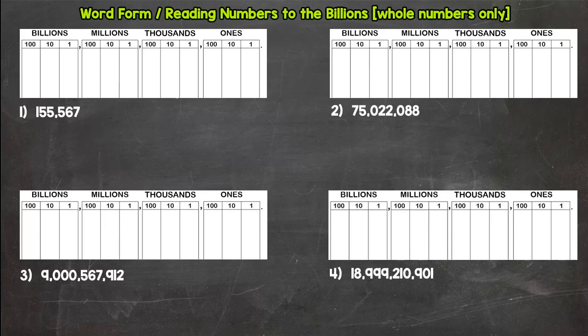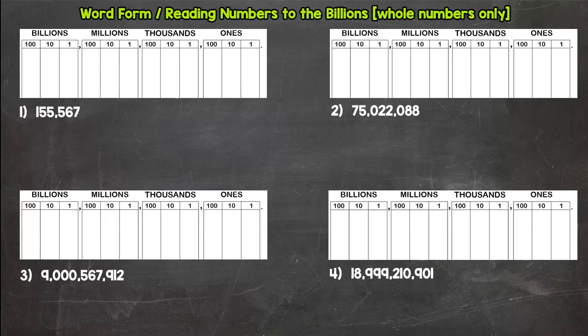If you're struggling — even if you're struggling with me today through the first couple and you're not sure what I'm doing — just stick with it, you'll get it down. Your goal after these videos is to be able to read and write numbers up to the billions. This is part one, with four numbers. We'll follow up with part two for extra practice, and then a practice video where you'll do some on your own.